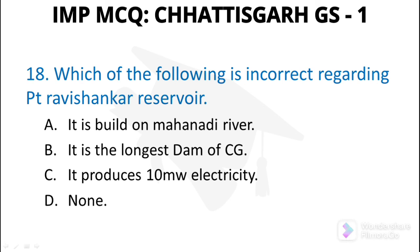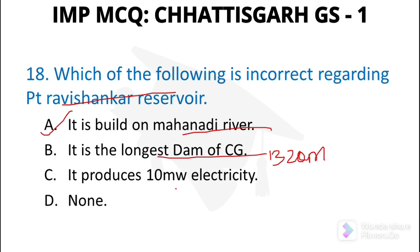Question number 18: Which of the following is incorrect regarding Pandit Ravi Shankar Reservoir? It is built on Mahanadi River — we are talking about Gangrel Dam near Dhamtari. It is the longest dam of Chhattisgarh, with a length of 1320 meters. It produces 10 megawatt electricity. All statements are correct, so the answer is option D — none.